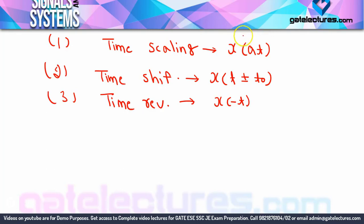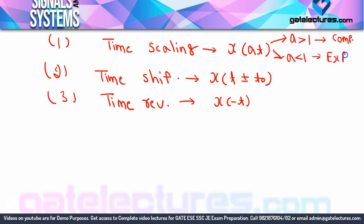In time scaling, if a is greater than 1, the signal gets compressed. Similarly, if a is less than 1, the signal gets expanded. So if x(t) is given and you perform x(at): if a > 1, the original signal will be compressed, and if a < 1, the signal will be expanded.